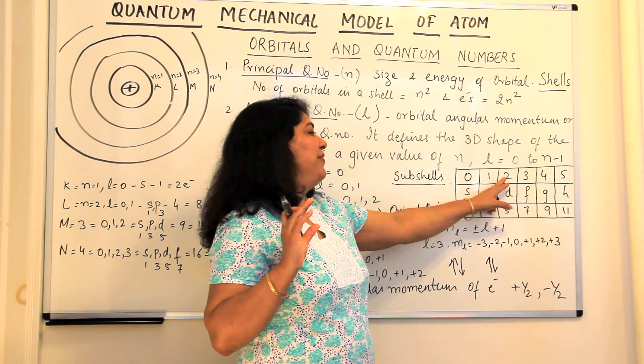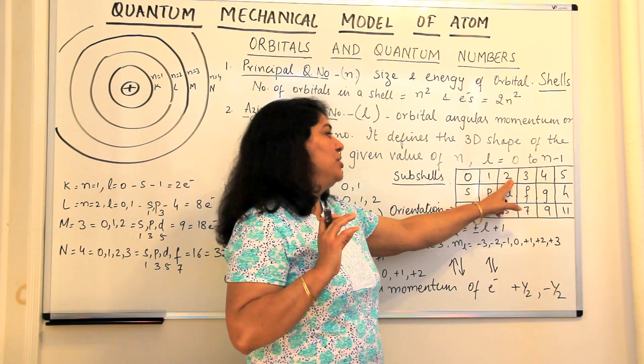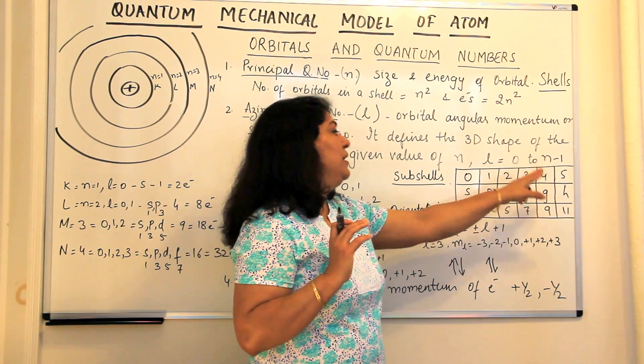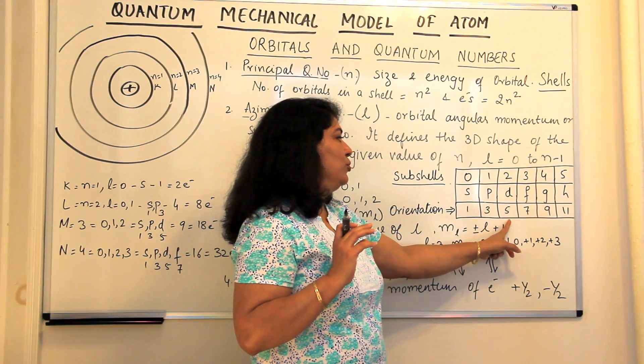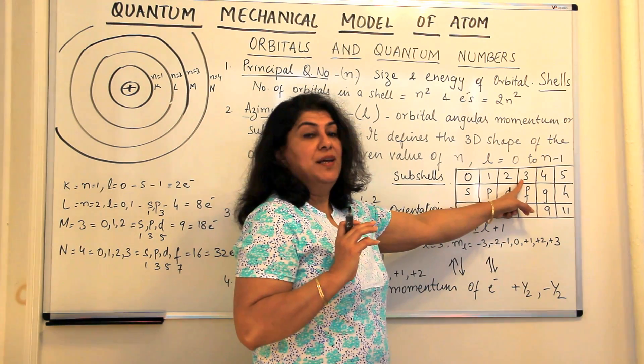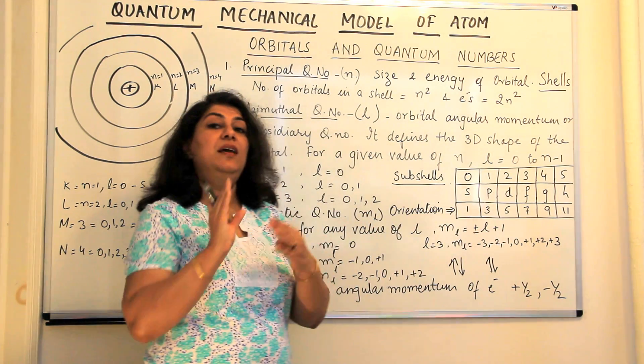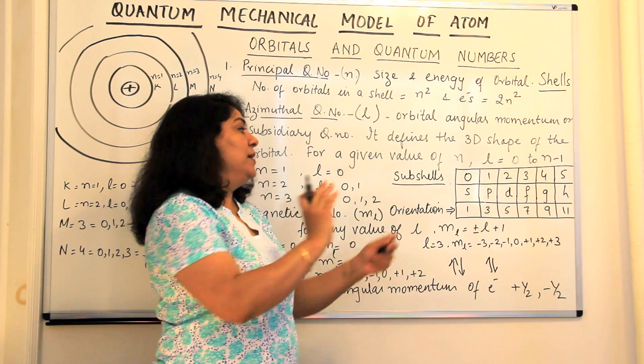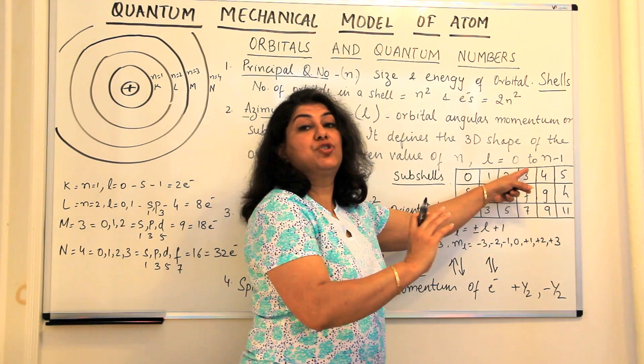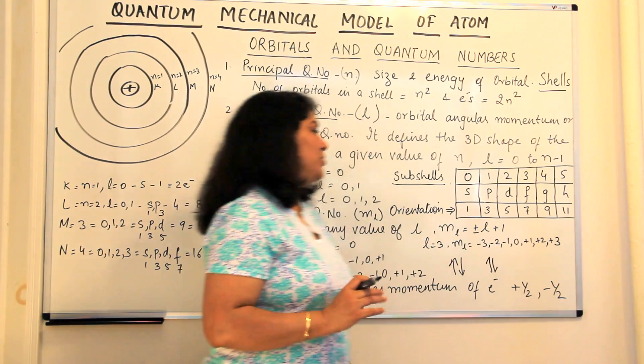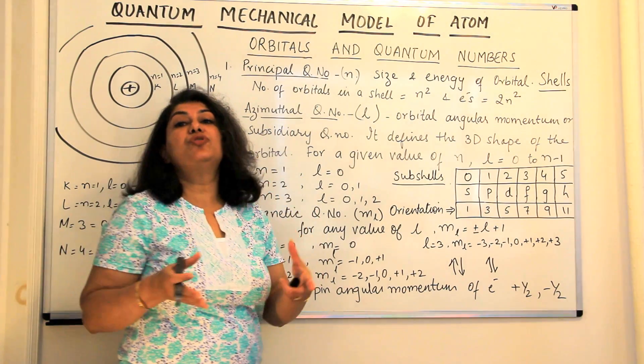This would have 5. Why? Minus 2, minus 1, 0, plus 1, plus 2. So it has 5 rooms. This apartment is 3, so it would have minus 3, minus 2, minus 1, 0, plus 1, plus 2, plus 3. So it has 7 rooms. So that is how you come to the orbitals.